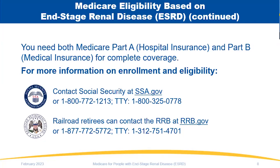If you need to have additional questions for Medicare eligibility, there are two federal agencies that oversee enrollment and eligibility. The same applies whether Medicare is based on age, disability, or ESRD. The majority of people contact Social Security at ssa.gov or 1-800-772-1213, with a TTY number also available. Railroad retirees would contact the Railroad Retirement Board. These are the two federal agencies responsible for determining your enrollment and eligibility for Medicare, including verifying work credits and processing your enrollment.